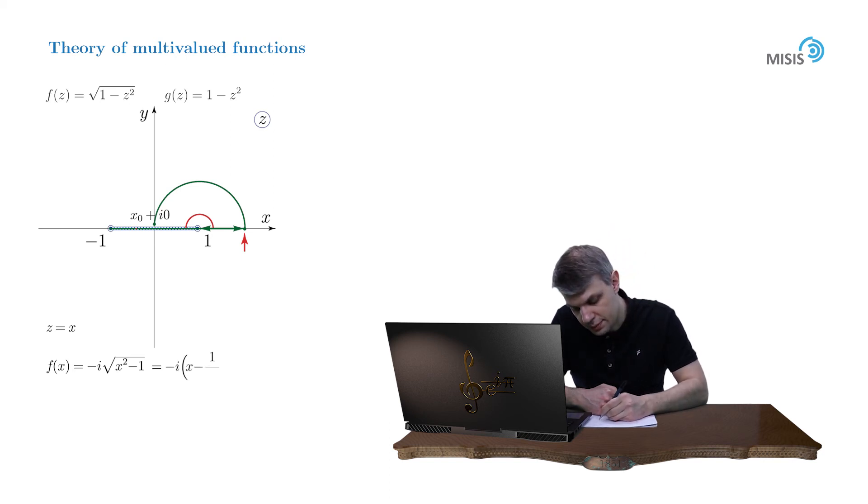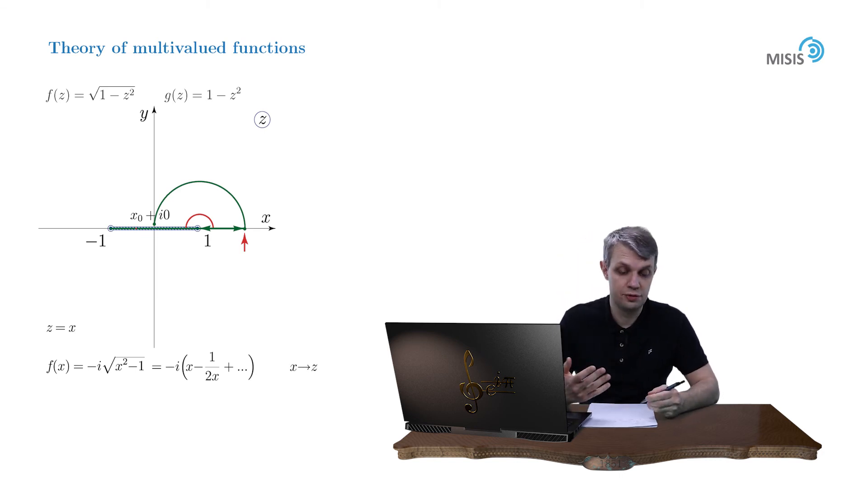We obtain x minus 1 over 2x. And changing back to z, we obtain the Laurent expansion for our f function. It's minus i z plus i over 2z.